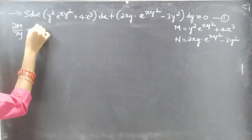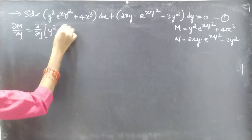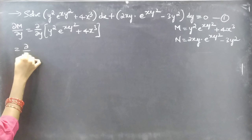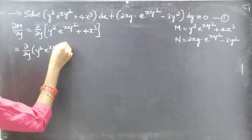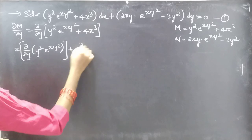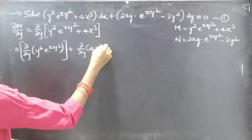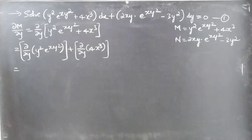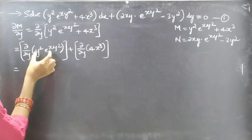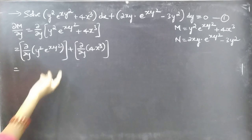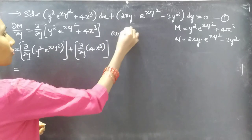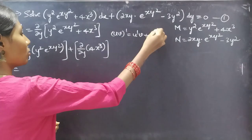Partial derivative of M with respect to y: ∂/∂y of (y² e^(xy²) + 4x³). We can write this as ∂/∂y of the first term y² e^(xy²) plus ∂/∂y of the second term 4x³. Since it is a partial derivative with respect to y, we read x as constant. Here we have two functions y² and e^(xy²), so we apply the product rule (uv)' = u'v + v'u.